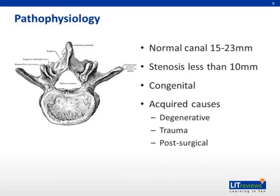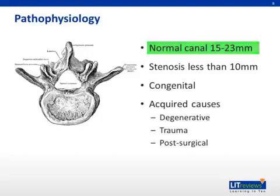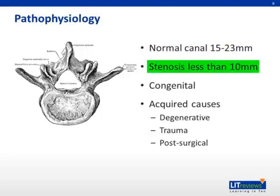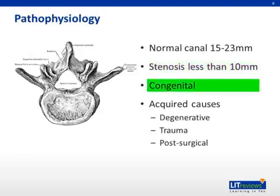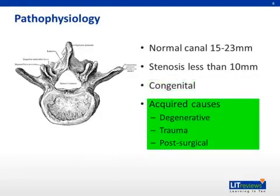Pathophysiology. Spinal stenosis is the condition caused by anything that leads to a narrowing of the spinal canal itself. Normally, the spinal canal ranges from 15 to 23 millimeters wide. Typically, when the canal becomes smaller than 10 millimeters, people usually start to develop symptoms. Sometimes, spinal stenosis is caused by a congenital narrowing, but most of the time it is acquired over time.